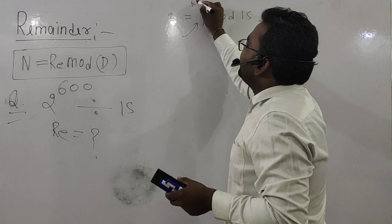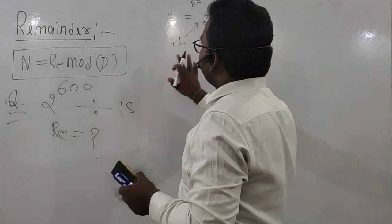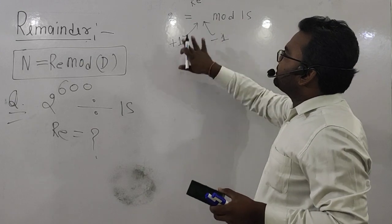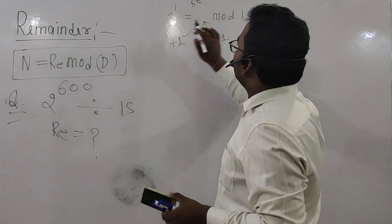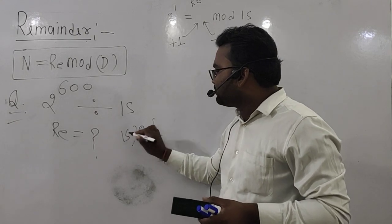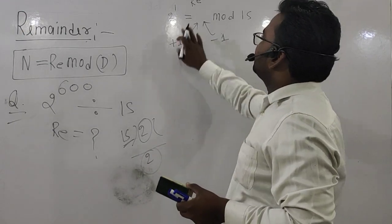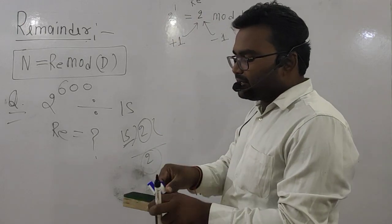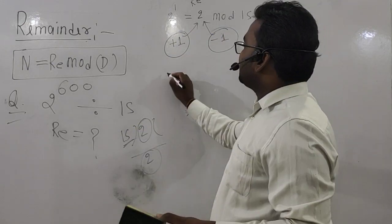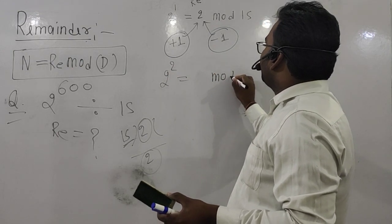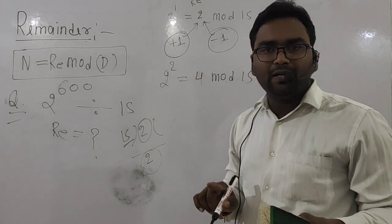Our objective is to find a power of 2 such that the remainder when divided by 15 is either +1 or -1. Checking: 2÷15 gives remainder 2; 2^2=4, remainder 4; 2^3=8, remainder 8 — none of these are ±1. But 2^4 = 16, and 16 divided by 15 gives remainder 1. So 2^4 ≡ 1 (mod 15).